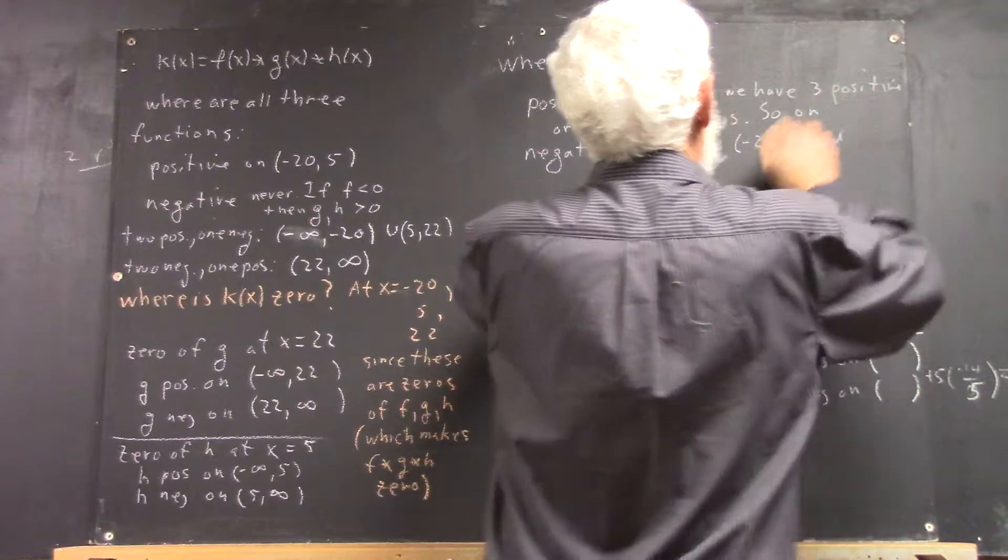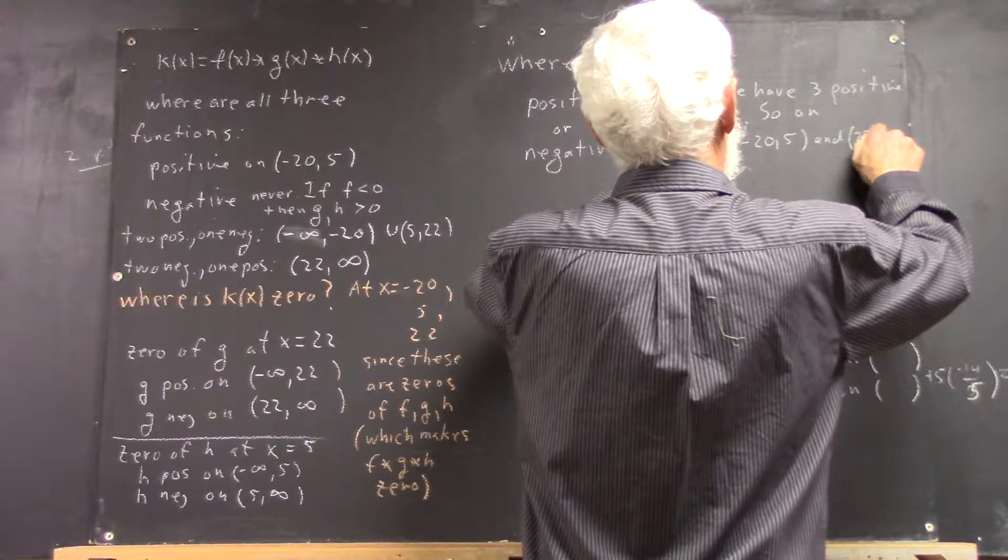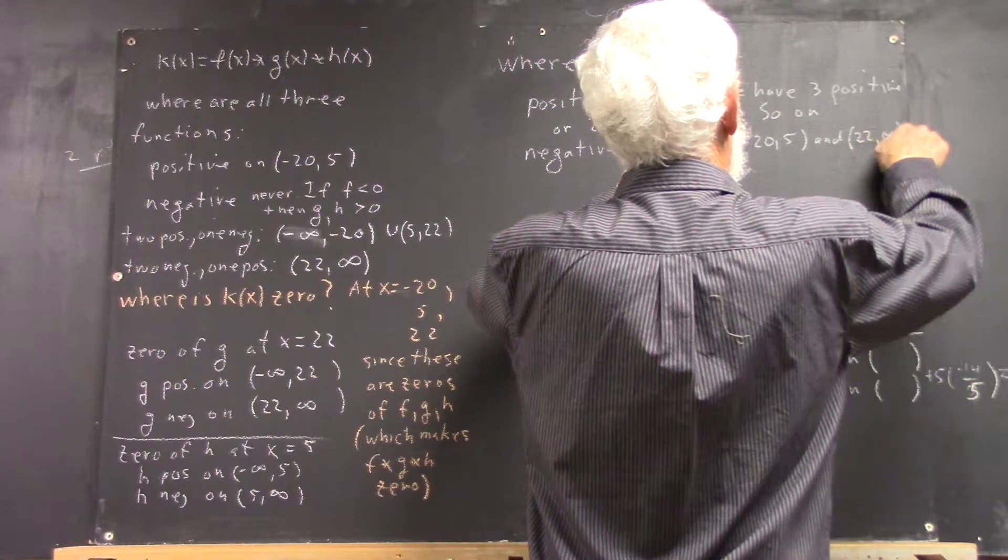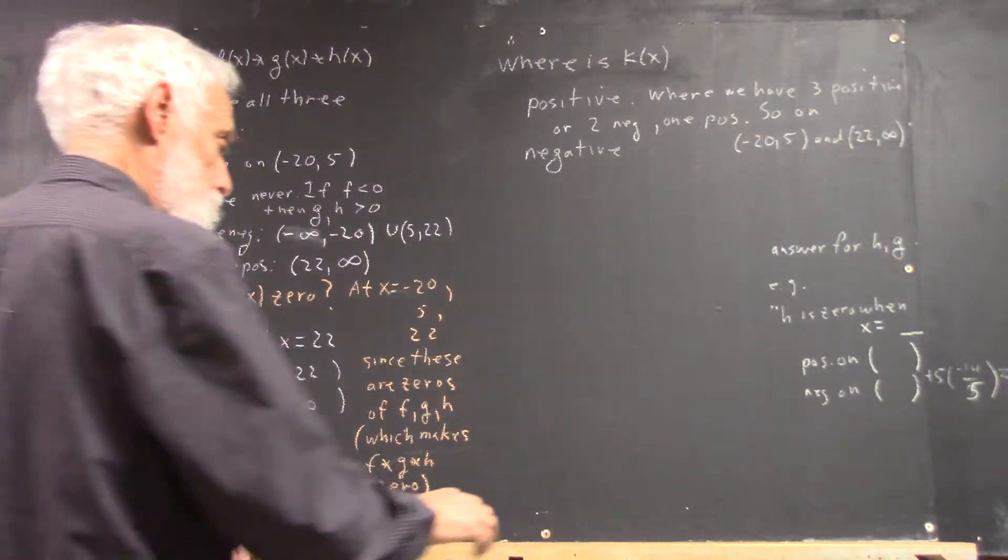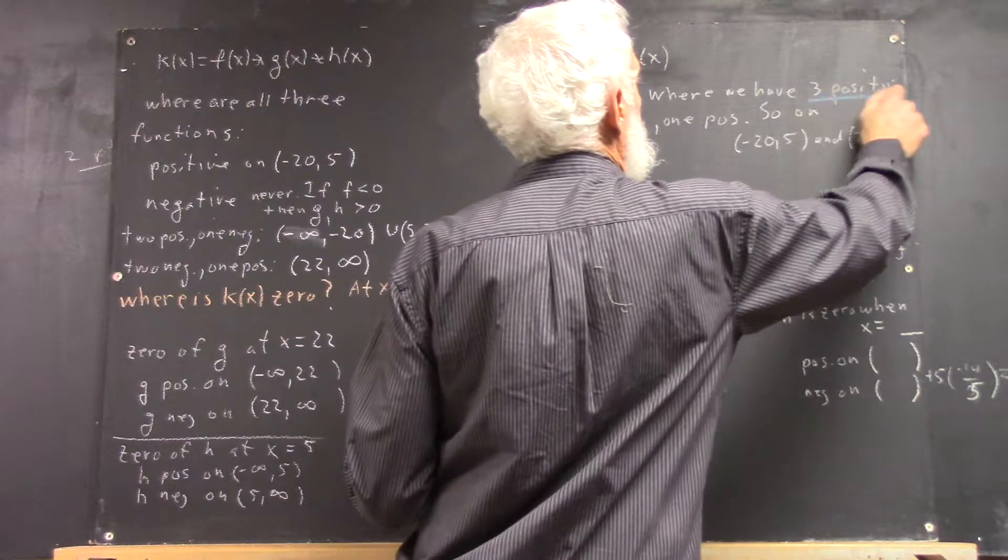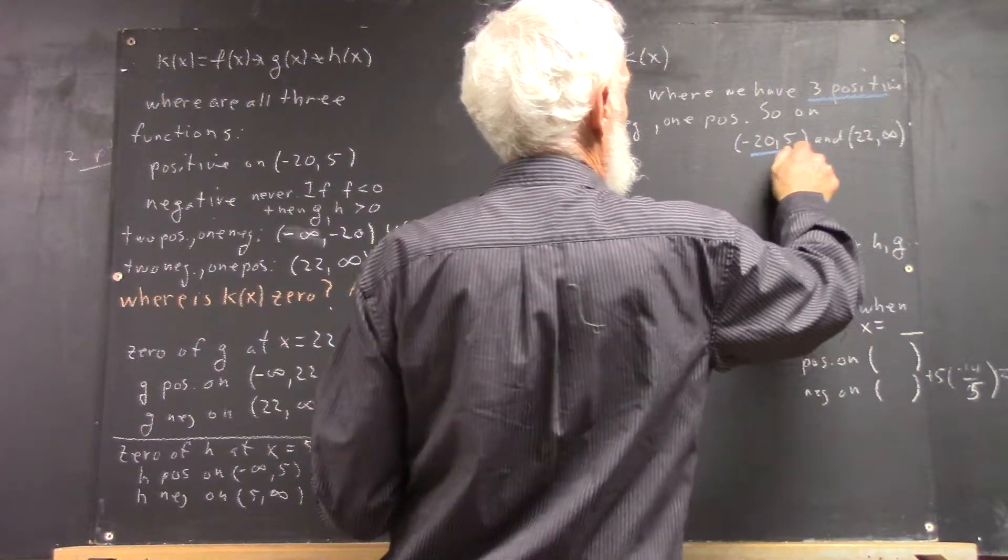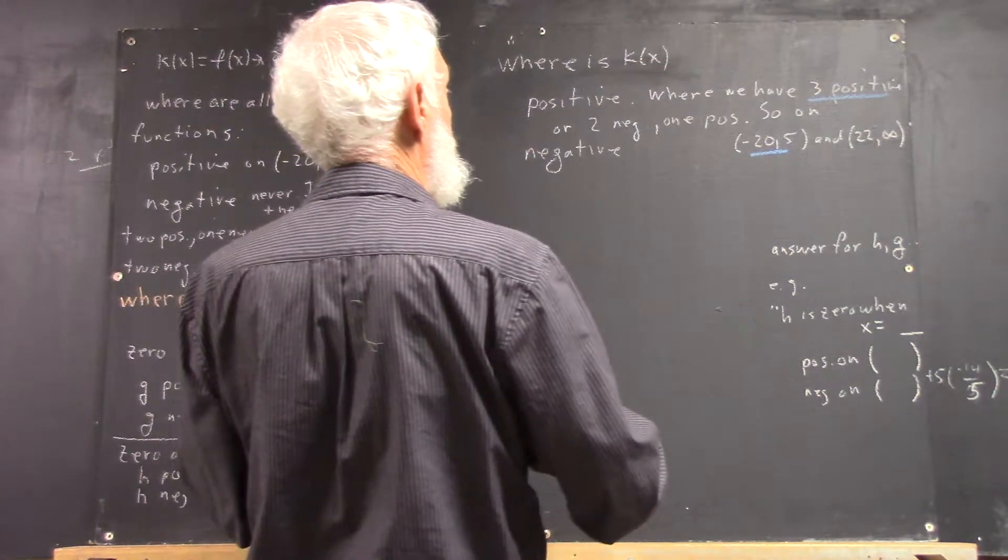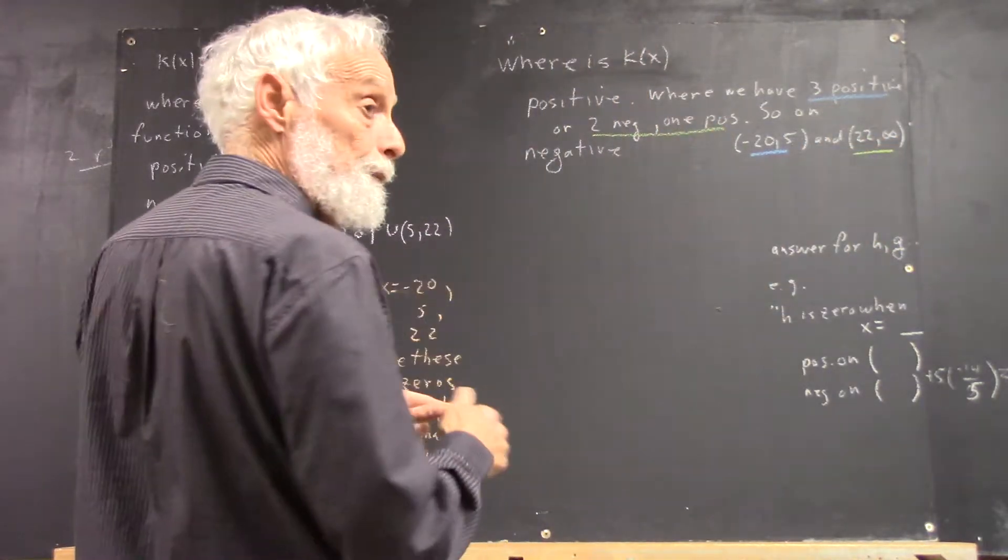So, three positive here, two negative on 22 infinity, right? And let's use just a little color to associate things. Three positive means that's the interval negative 25. Two negative one positive, that's our 22 infinity.